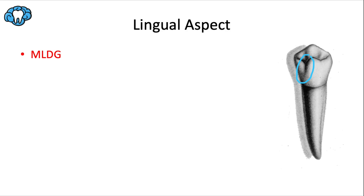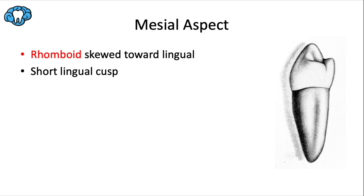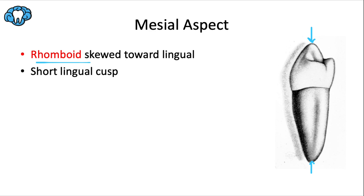For the mesial aspect, all maxillary posterior teeth from the side view are trapezoidal — narrow side toward the occlusal. All mandibular posterior teeth from the side view are rhomboid, like a rhombus or parallelogram, skewed toward the lingual. Because of this skew, the buccal cusp is centered over the root apex and the lingual cusp is centered more over the CEJ.